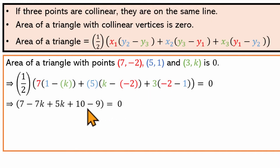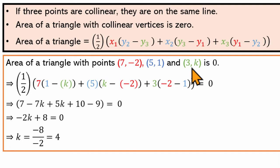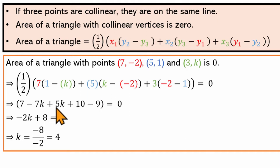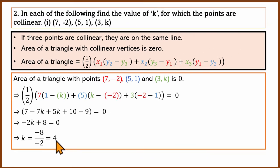We substitute the value into the formula and simplify to find k. For example: 7 × 1 = 7; 7 × (−k) = −7k; 5 × k = 5k; minus of minus gives plus, so 5 × 2 = 10; 3 × (−3) = −9. Simplifying this arithmetic, the answer for the first part of the question is k = 4.